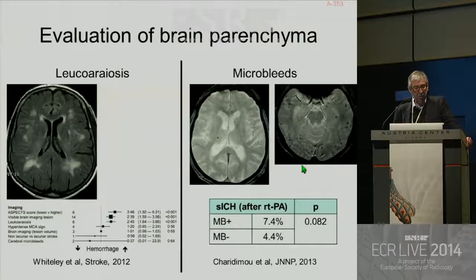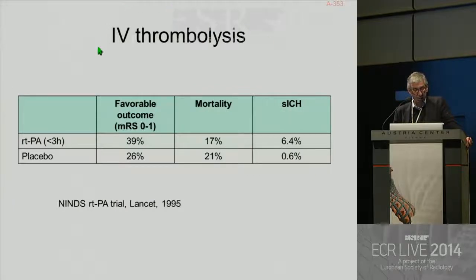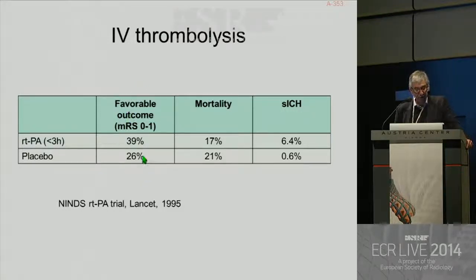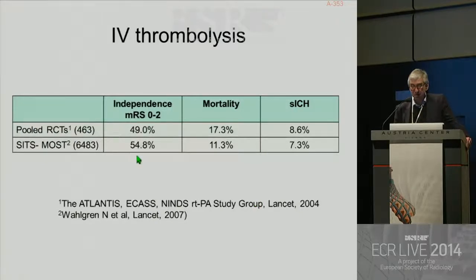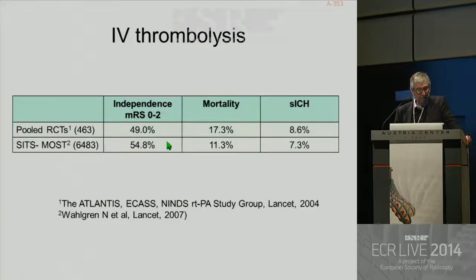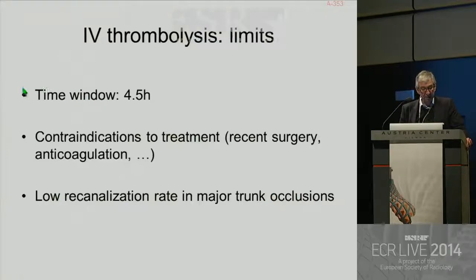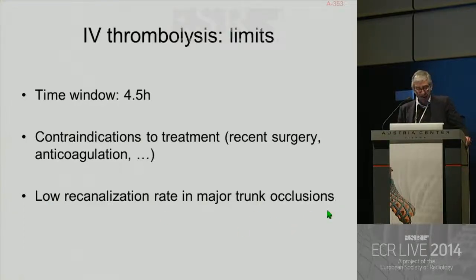Microbleeds are not a contraindication to IV thrombolysis. IV thrombolysis was introduced after the NINDS rtPA trial showing a favorable outcome after rtPA in the time window of 3 hours compared to placebo — 39% favorable outcome compared to 26% in the placebo group. These results were further confirmed by several RCTs and pooled analyses showing good clinical outcome in 49%, and also in the SITS-MOST registry with 54% good clinical outcome. But IV thrombolysis has a lot of limits: the time window is 4.5 hours, there are many contraindications, and there is a low recanalization rate in major trunk occlusions.